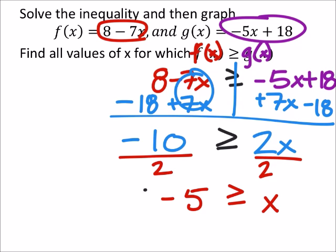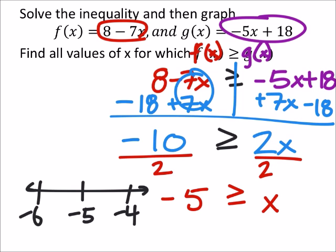Let's go ahead and graph that on a number line. So at negative 5, this would be negative 6 and negative 4. This one is equal to, so I have a bracket. It's not eating the x, so it's going to the left. So I would have a square bracket right here.